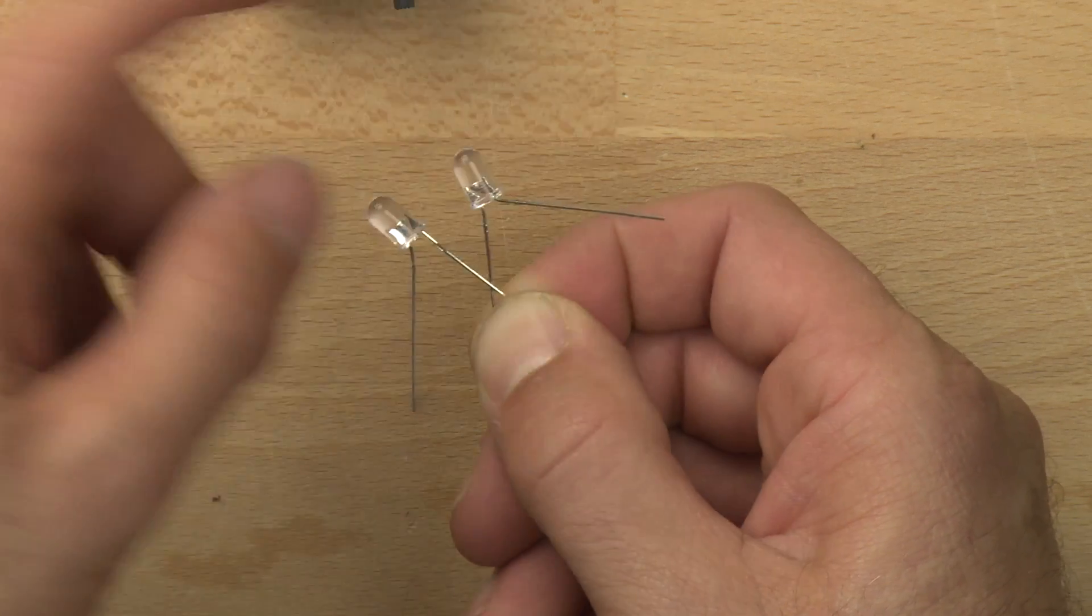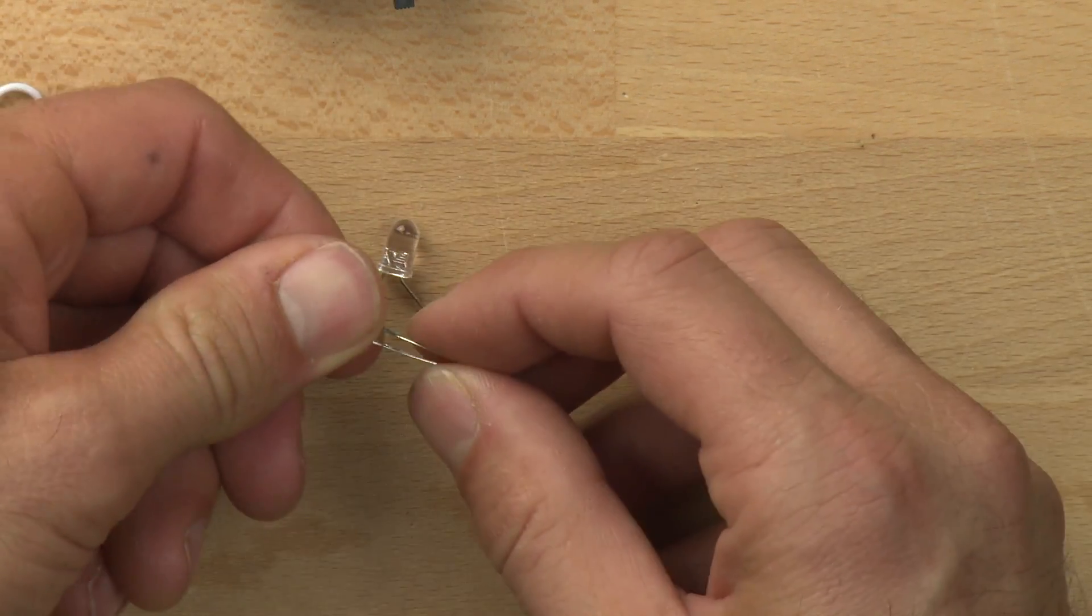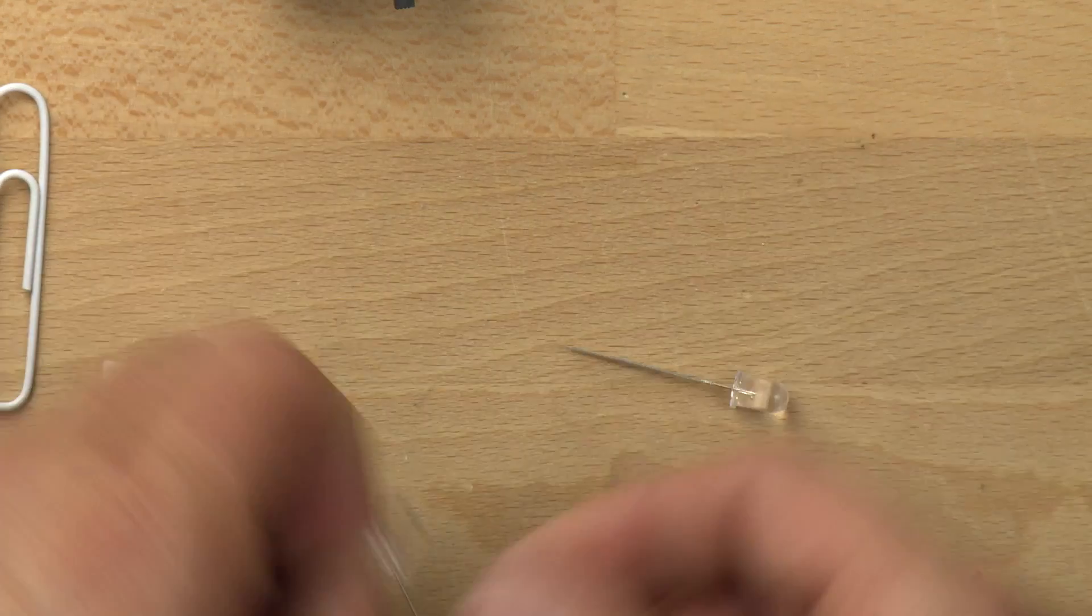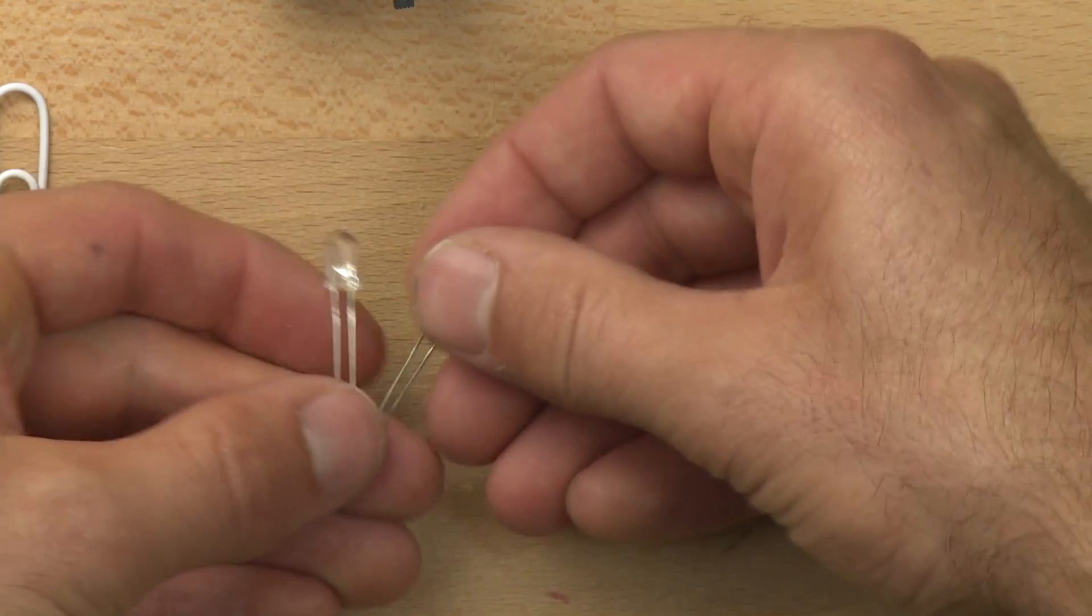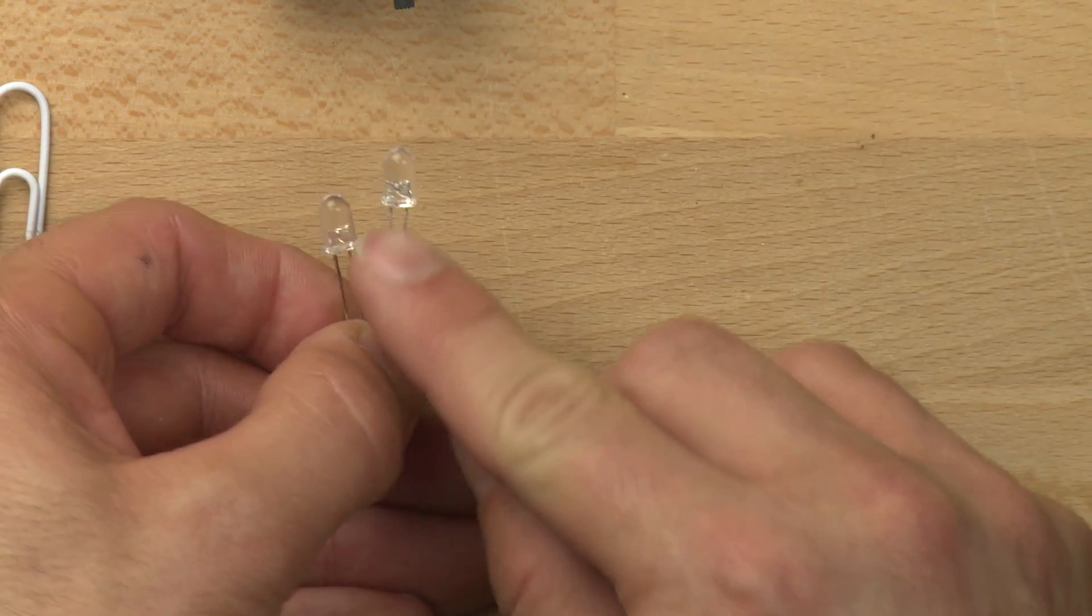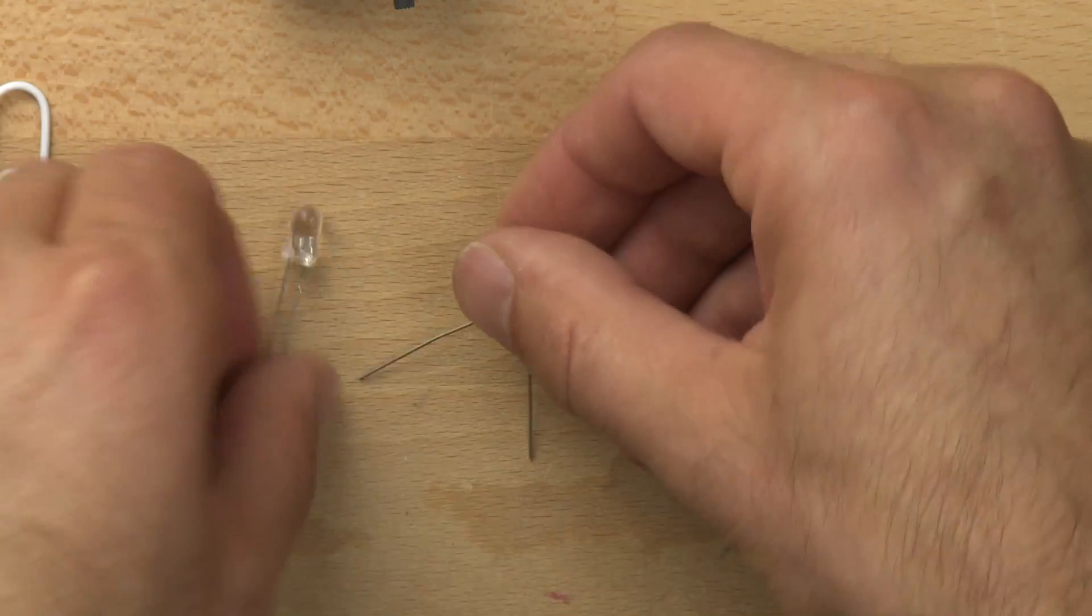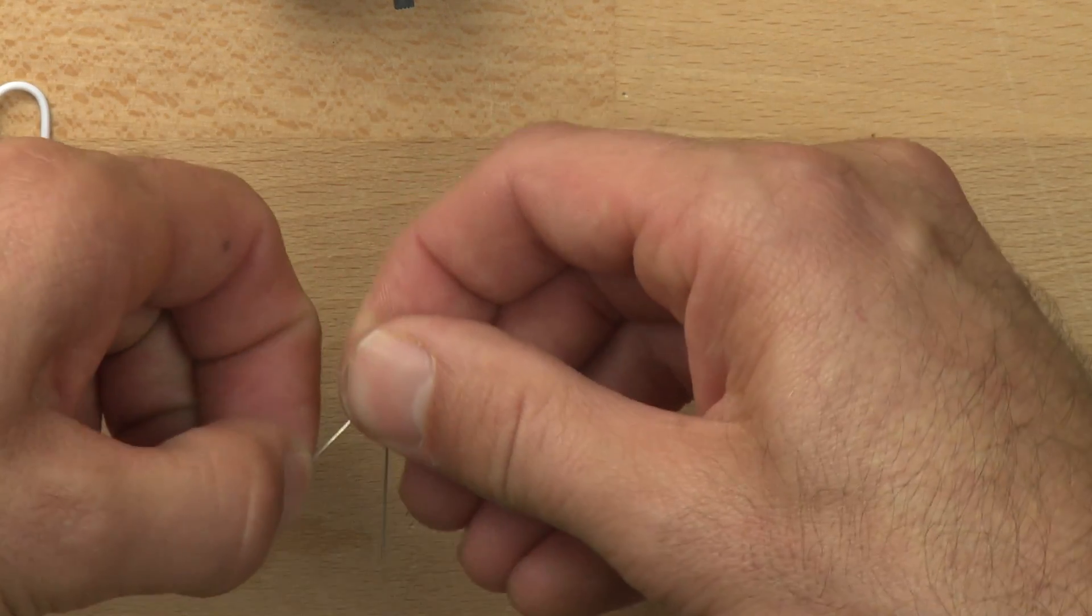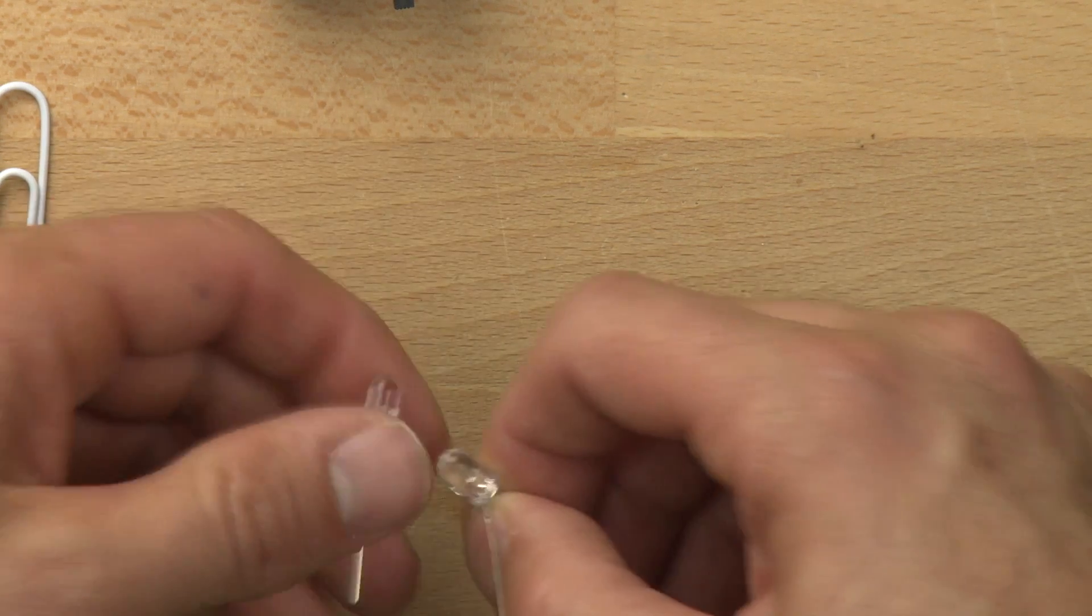These are the negative sides here, and we can always double check that by straightening the legs back out again if we want to, to just get a sense for which one's longer. The longer leg is again connected to that littler piece of material on the inside. Okay, so let's make the center positive.